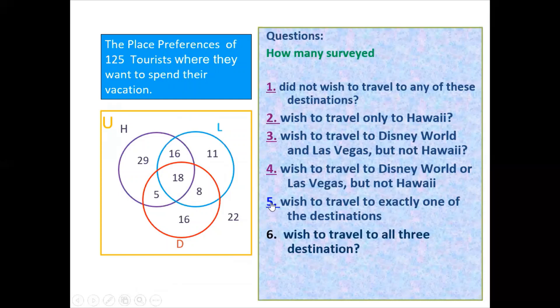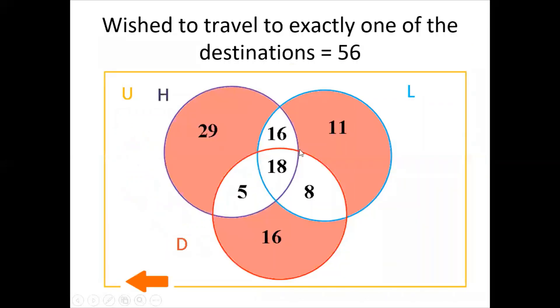Question 5: How many wish to travel to exactly one of the destinations? That means only Hawaii, only Las Vegas, or only Disney World. We add 29 plus 11 plus 16, and the answer is 56.